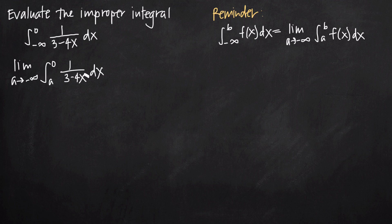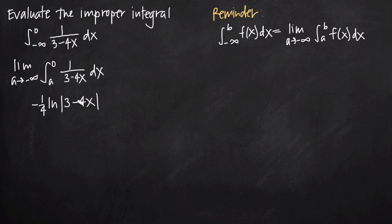Now we can evaluate the integral. Because the denominator is linear — we only have a first-degree x term and a constant — we can say the integral is the natural log of the absolute value of 3 minus 4x. But by the chain rule, we have to divide by the derivative of the inside function. The derivative of 3 minus 4x is negative 4, so we divide by negative 4, which is the same as multiplying by negative one-fourth. We evaluate this on the limits of integration a to 0, taking the limit as a approaches negative infinity.